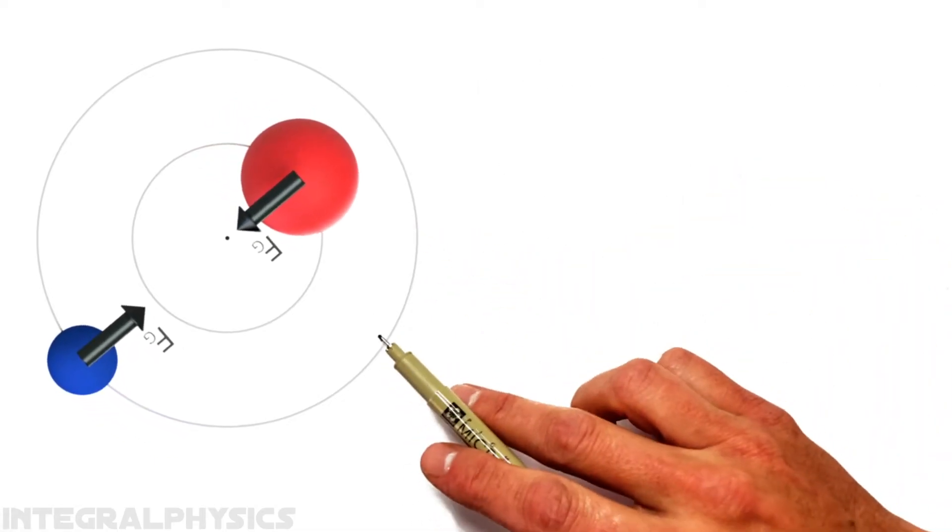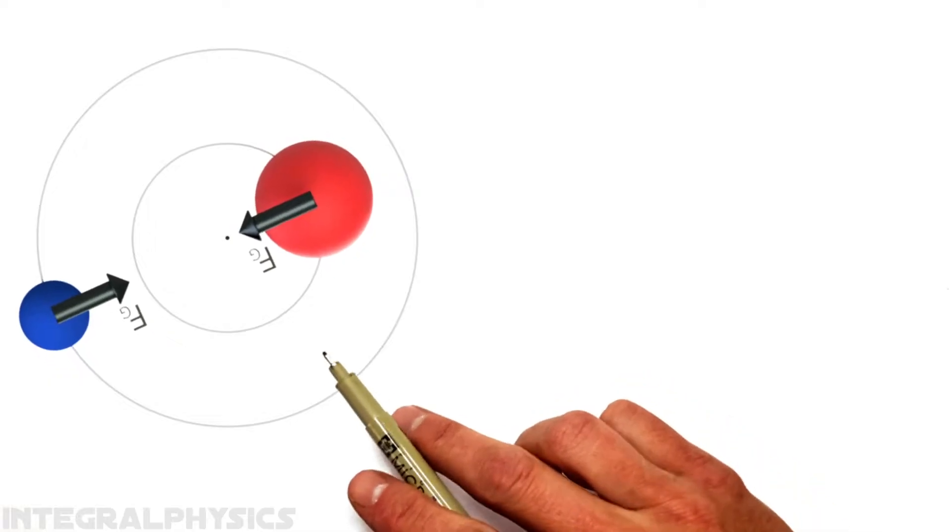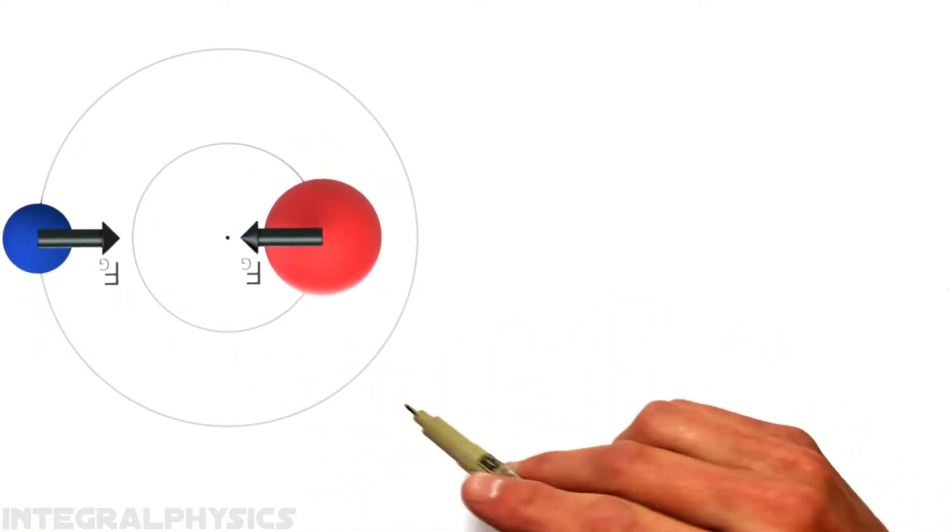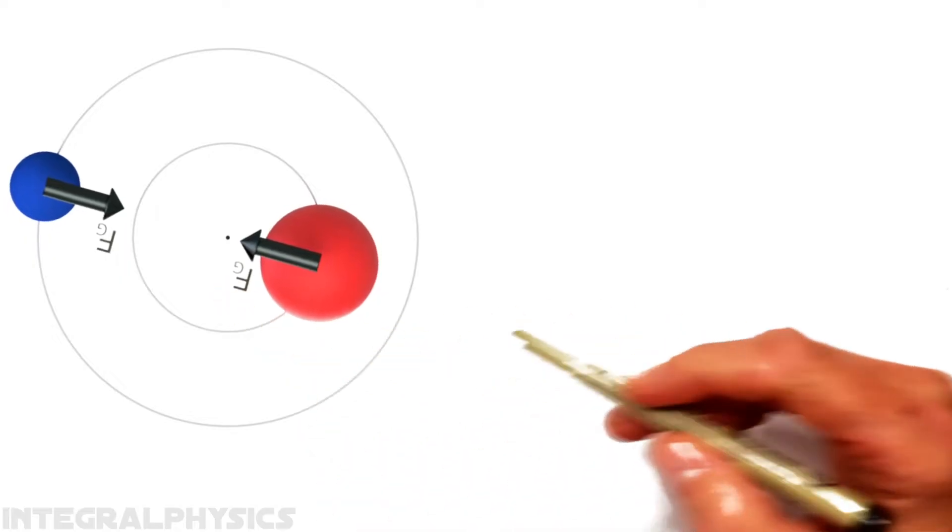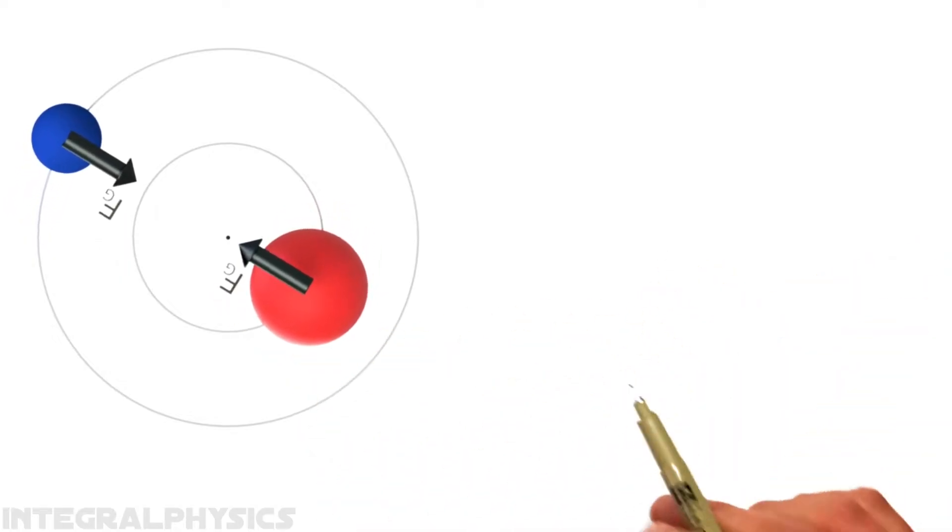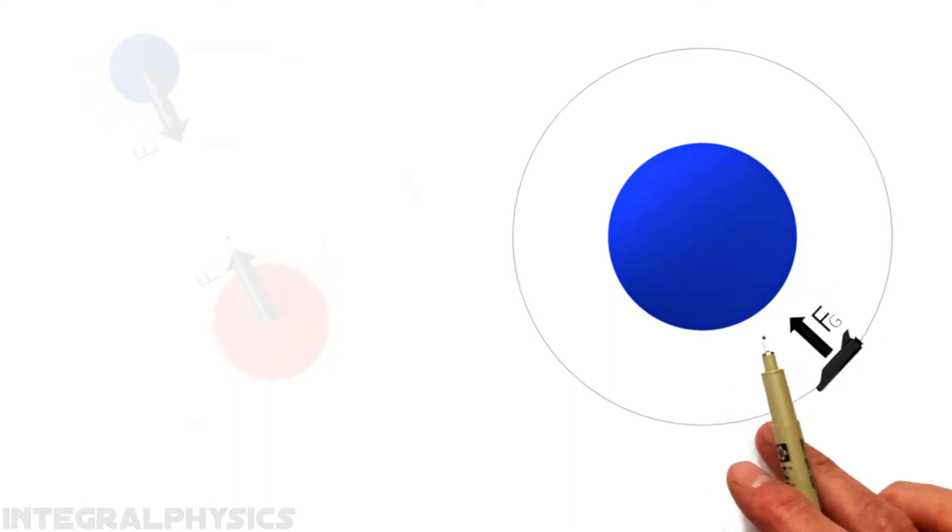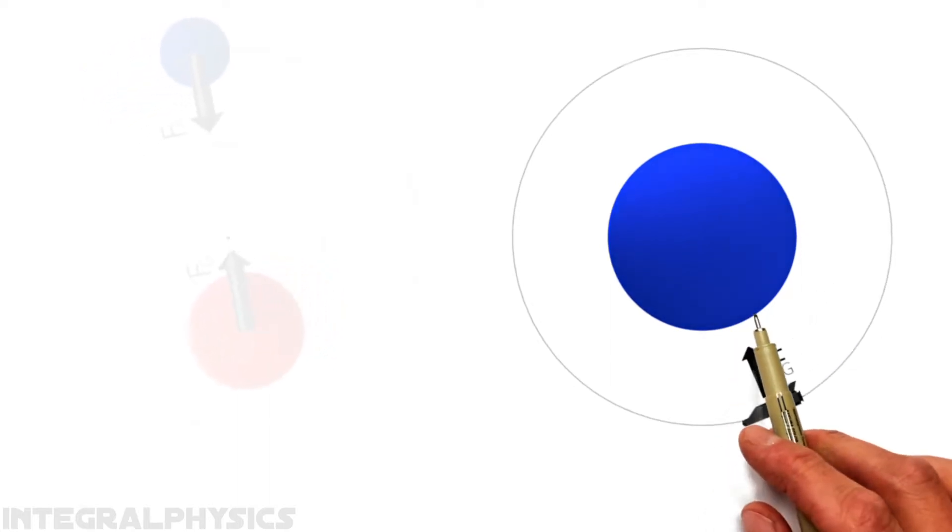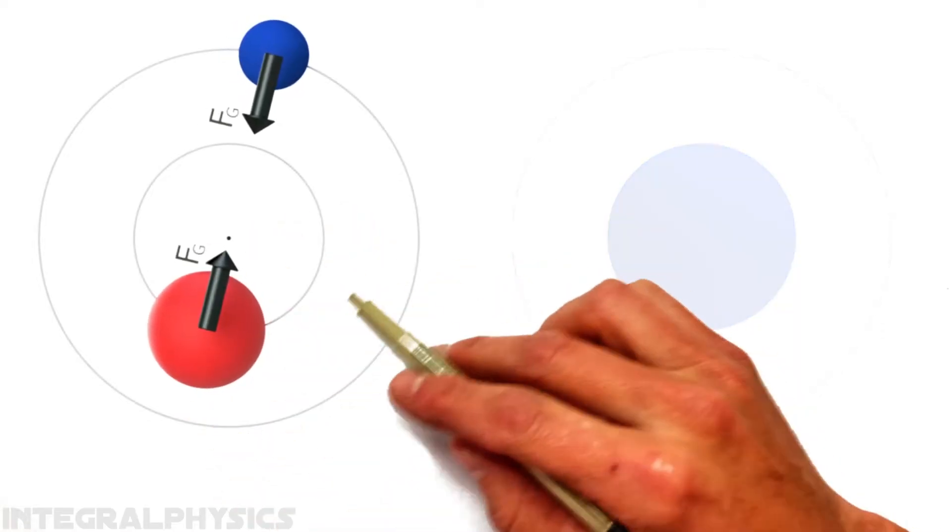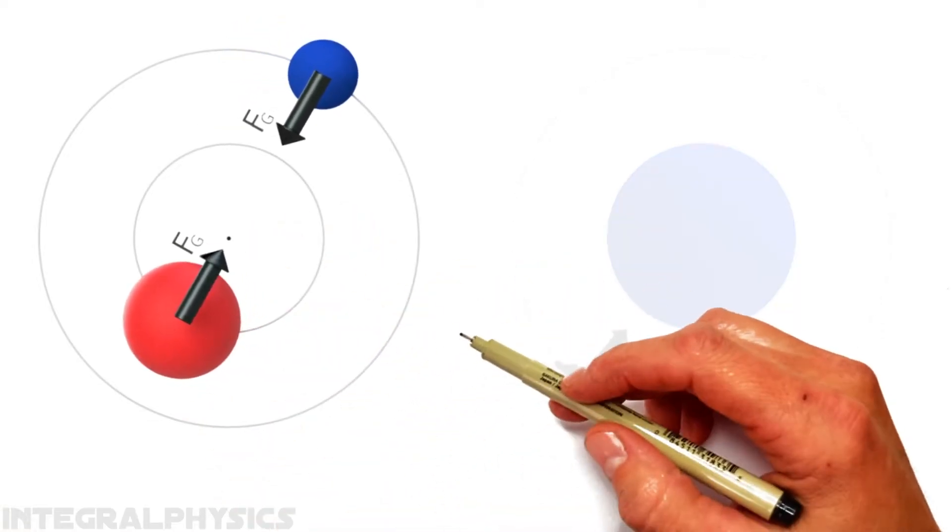So looking at the free-body diagram for each of these masses, there's only the force of gravity pulling each of them inward toward the center of their respective orbits. Now, in the case of the small spaceship orbiting the much larger Earth, you can say the center of the spaceship's orbit is the Earth. But in our binary system over here, that's not the case.